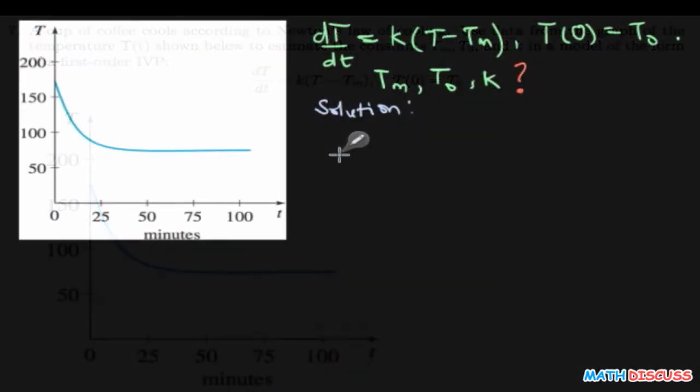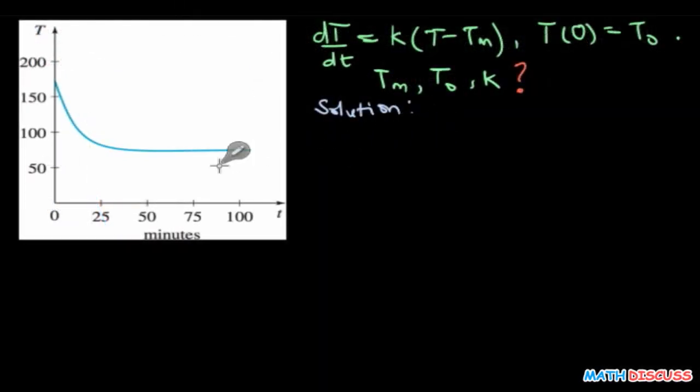Now here is question number seven. On the left-hand side, we have the graph of a cup of coffee that cools down according to Newton's Law of Cooling, and this differential equation depicts the process that is going on. Based on what we have here, you have the cup of coffee that's initially very hot.